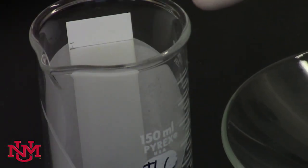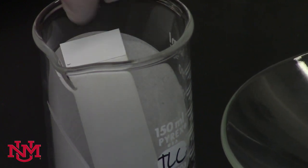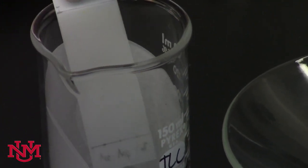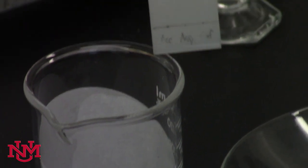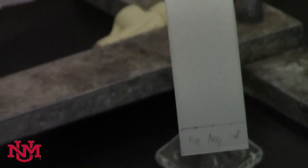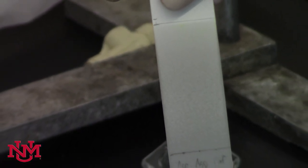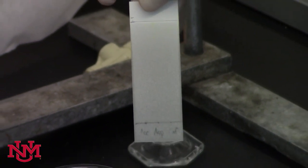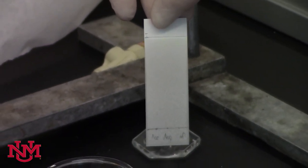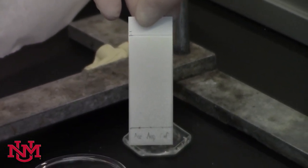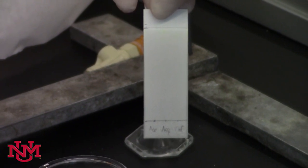When the solvent front reaches the top line, remove the TLC plate as carefully as possible. Hold it vertically a little bit so that it dries. Since this solvent has a little bit of acetic acid, you're going to need to wait a little bit in order for it to dry, and then we'll go back to the UV lamp and visualize the TLC plate.